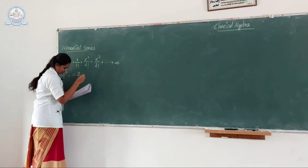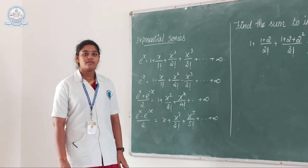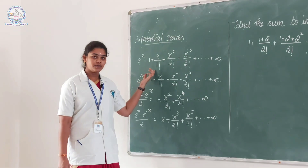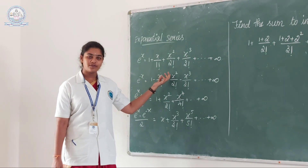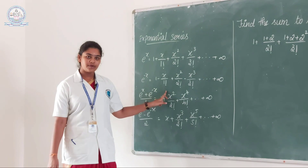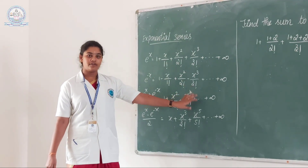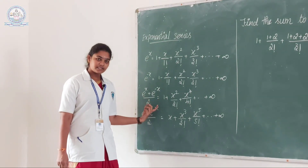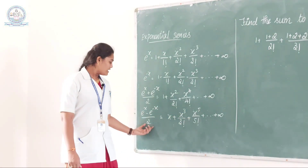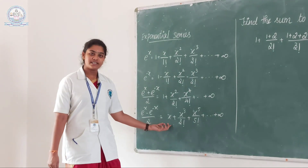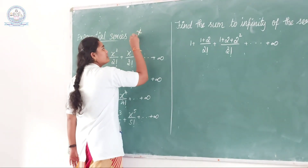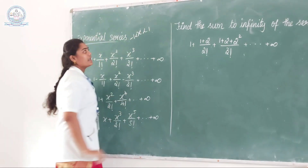Hence proved. Now we discuss the second topic, exponential series. The definition is: e power x equals 1 plus x over 1 factorial plus x squared over 2 factorial plus x cubed over 3 factorial, up to infinity. e power minus x equals 1 minus x over 1 factorial plus x squared over 2 factorial minus x cubed over 3 factorial, up to infinity. (e power x plus e power minus x) over 2 equals 1 plus x squared over 2 factorial plus x to the power 4 over 4 factorial, up to infinity. And (e power x minus e power minus x) over 2 equals x plus x cubed over 3 factorial plus x to the power 5 over 5 factorial, up to infinity. Here x is in the open interval minus 1 to plus 1.